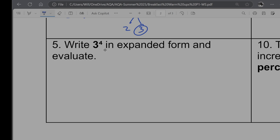So 3 to the power 4 becomes 3 times 3 times 3 times 3. That's going to be the expanded form. And then that's going to become 9 times by 9, which would be 81.